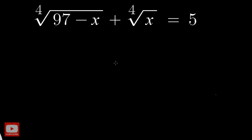Hello everyone. In this video, we are going to take a look at a very interesting radical equation. As you can see in the equation, the radicals are of the order 4. So the equation is 4th root of 97 minus x plus 4th root of x, and that's equal to 5.